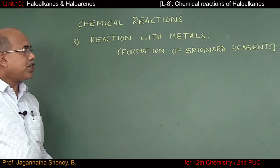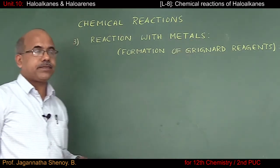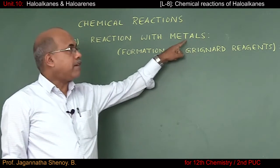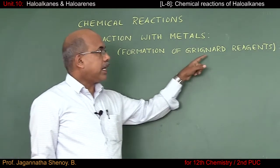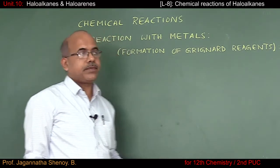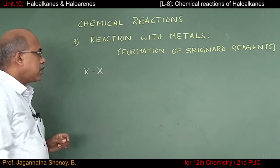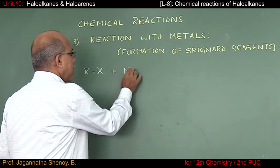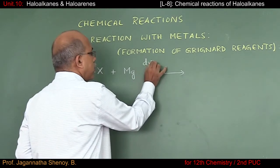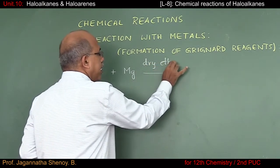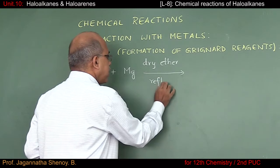The next reaction I am going to consider is the reaction of haloalkanes with metals. The metal I am going to consider in the first case is magnesium. The product will be the Grignard reagent. I will consider alkyl halide as RX, treat it with magnesium ribbon, and the reaction is carried out in the presence of dry and alcohol-free ether. You have to reflux the reactant mixture.